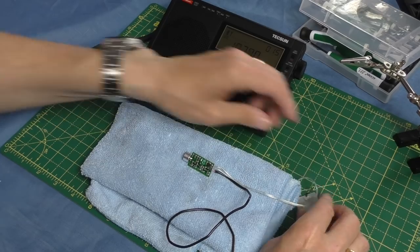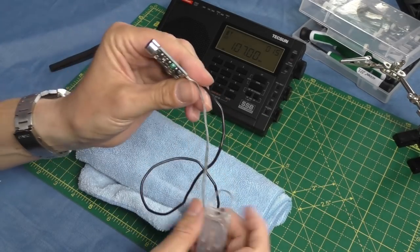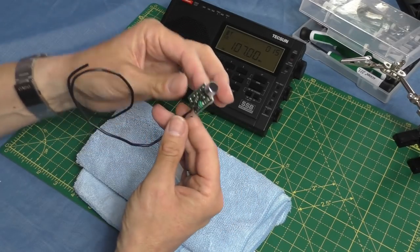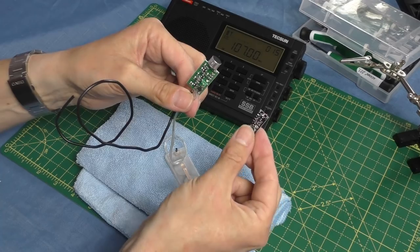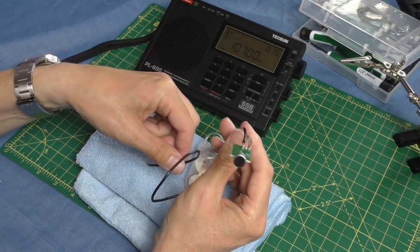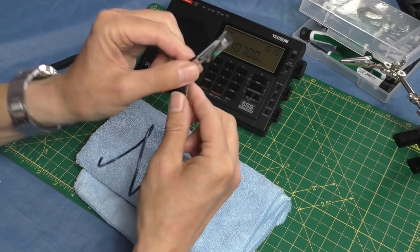There you go, tuned in at 107 megahertz. The next thing now is to find something I could conceal this in, as if it was going to be used in a spy bug situation. It's quite big, much bigger than the first one, so it does limit what I can put it in. I'm going to look around the household and see if I can find a household object to conceal this little spy bug in.